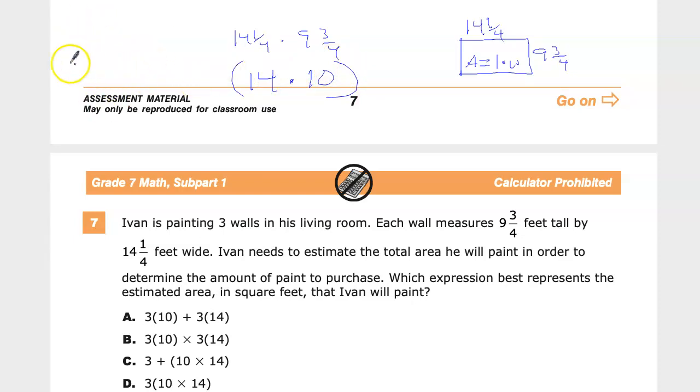So we have 14 times 10 plus 14 times 10 plus 14 times 10 because 3 walls are being painted. So now I need to figure out which expression matches that statement.